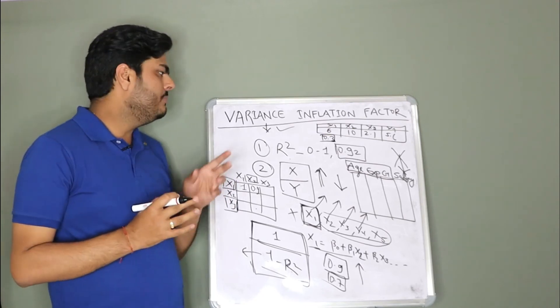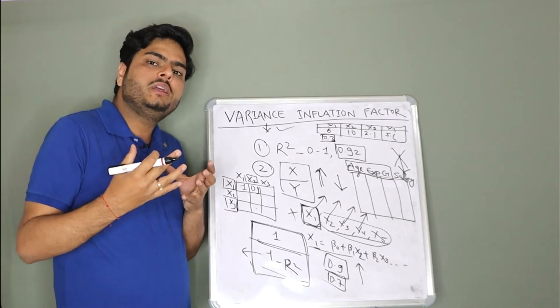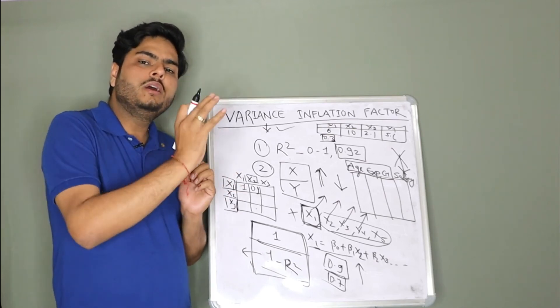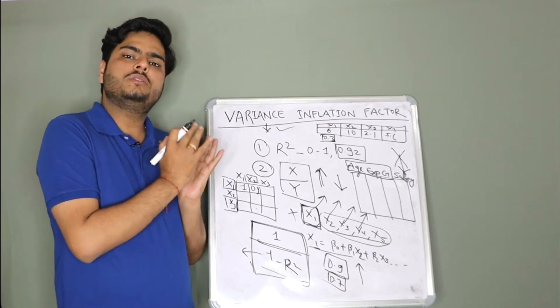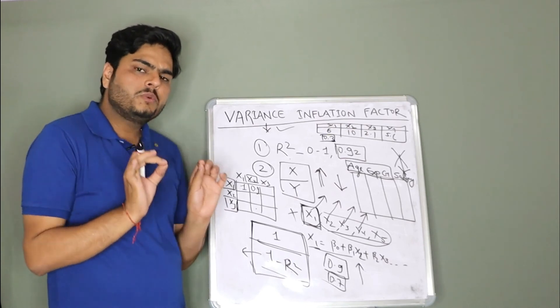What is VIF? A metric that tells you how other variables are explaining your one variable. So if VIF is high, we remove that variable because other variables are already explaining this variable. That is, in crisp, what is VIF.